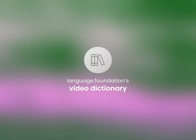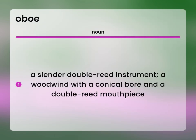Language.Foundation's Video Dictionary, helping you achieve understanding. A slender double-reed instrument. A woodwind with a conical bore and a double-reed mouthpiece.